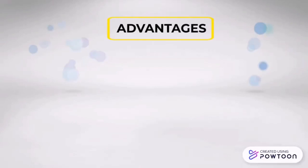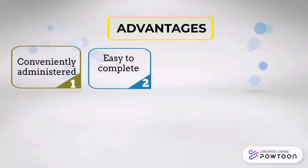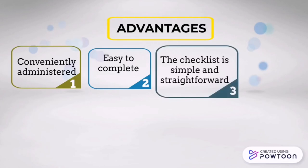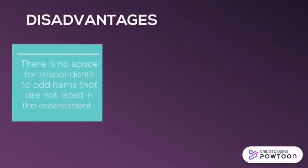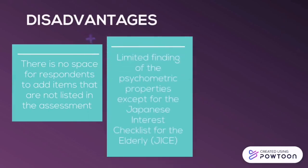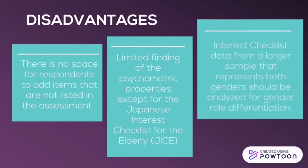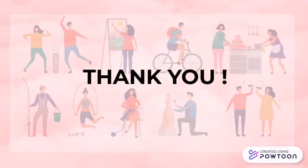This assessment is conveniently administered and easy to complete. The technique is simple and straightforward, less time-consuming in administration and scoring, and has a variety of different leisure activities. The disadvantages include there is no space for respondents to add items not listed in the assessment, there are limited findings of the psychometric properties except for JICE, and interest data from a larger sample representing both genders should be analyzed for general application. That's all from me. Thank you.